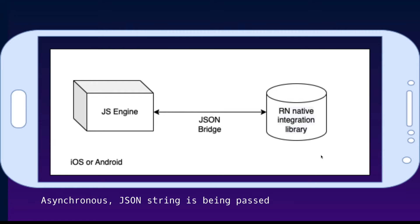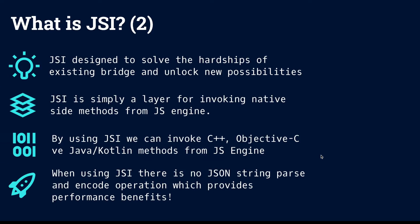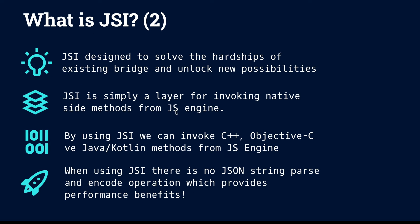You can see it's a little bit non-performant, right? So it needs optimization — that's why we have JavaScript Interface. JavaScript Interface is simply a layer between the JavaScript engine and the native side to invoke native methods from the JavaScript engine.